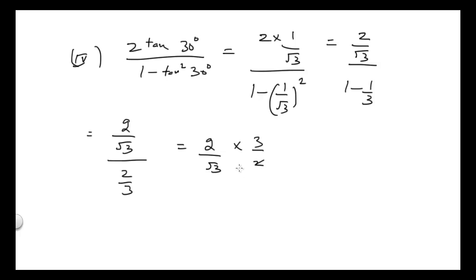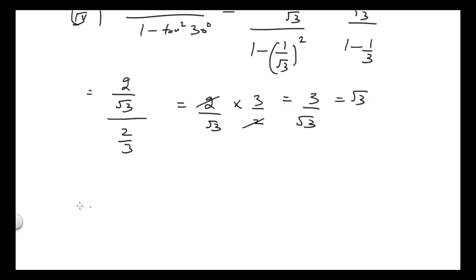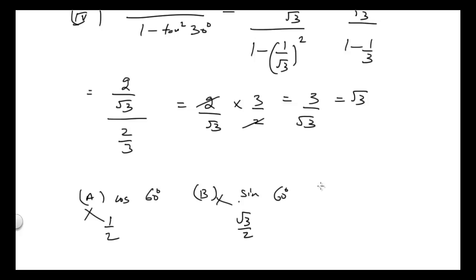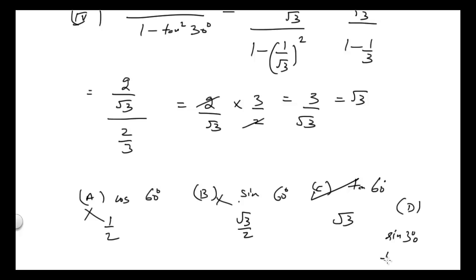So we get 2/√3 times 3/2. The 2s cancel, leaving 3/√3, which equals √3. Now checking the options: sin 60° = √3/2 so B is not the answer; cos 60° = 1/2 so A is not the answer; tan 60° = √3, so C is the correct answer. D is sin 30° = 1/2, so D is also not the option. The answer is C.